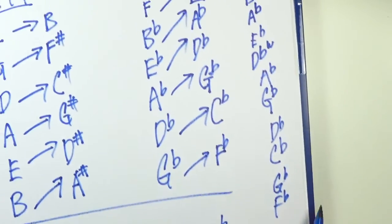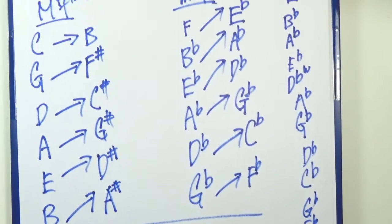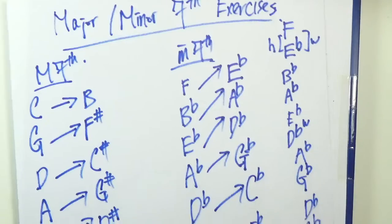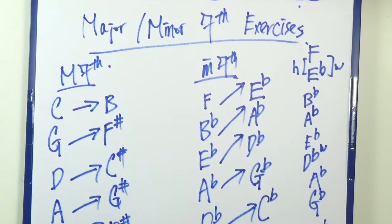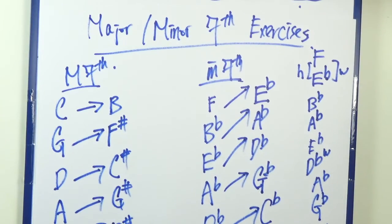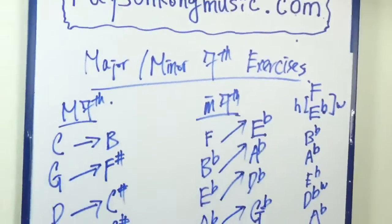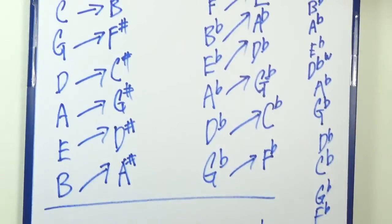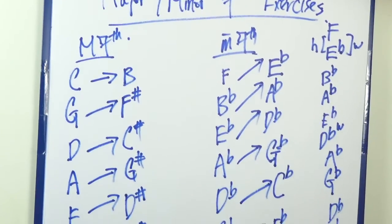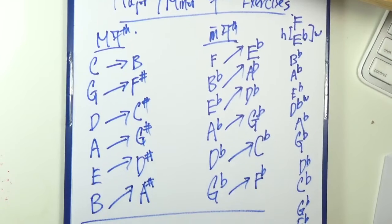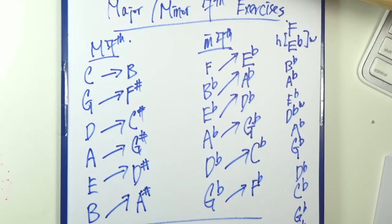So actually major and minor 7th are pretty easy to come by. Again, by counting backwards. Either a half step or a whole step, we should have the answer in like a second. So just be careful with this whole step, half step thing. So hope these make sense. And I'll see you in the next video where we would do some review. So thank you.